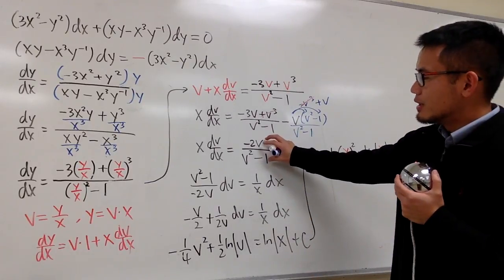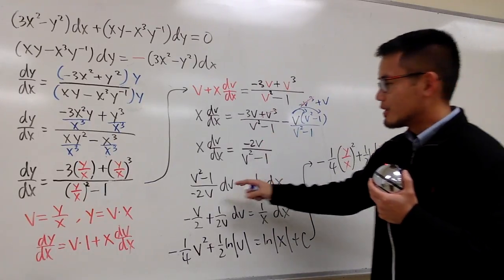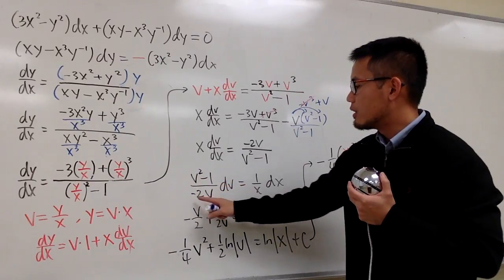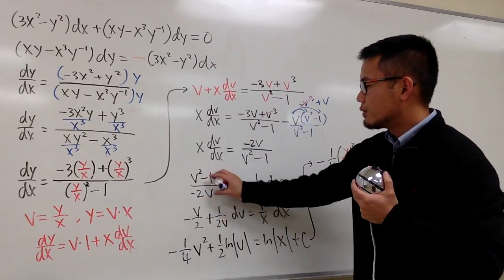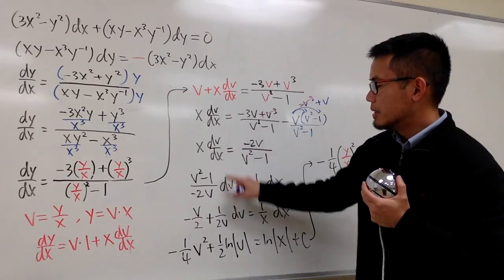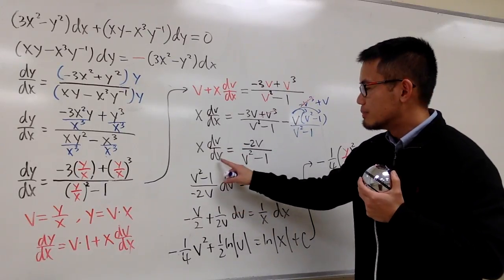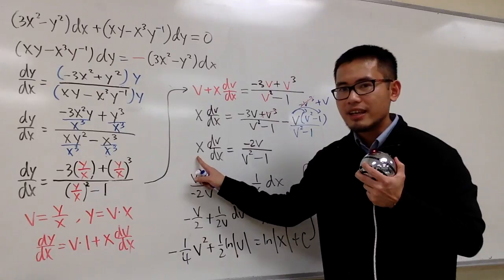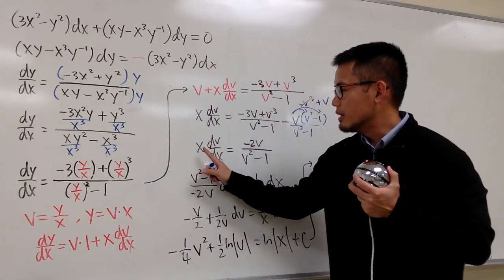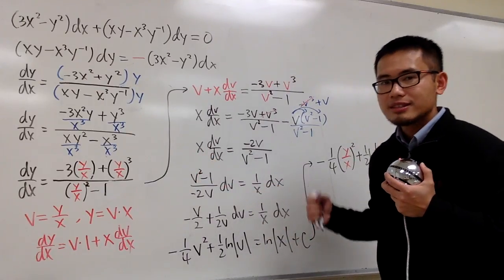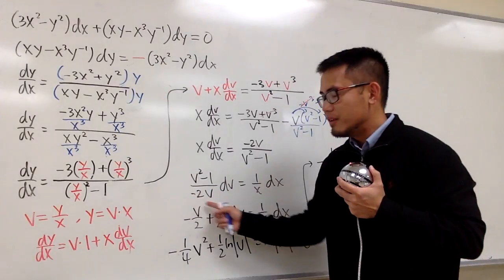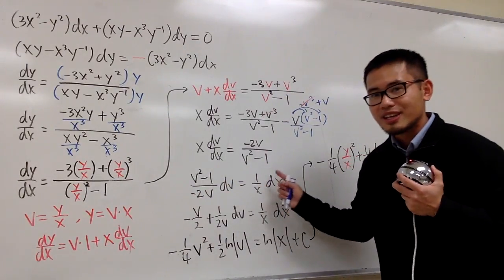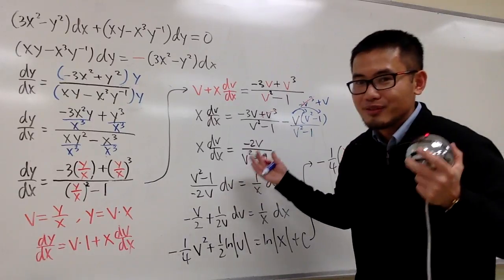Multiplying both sides by the reciprocal (v² minus 1) over (negative 2v), and keeping dv on the left while moving dx and dividing by x on the right, we get all the v's and dv's on the left-hand side and all the x's and dx on the right-hand side as 1/x dx. This separates the variables, so we can integrate both sides.